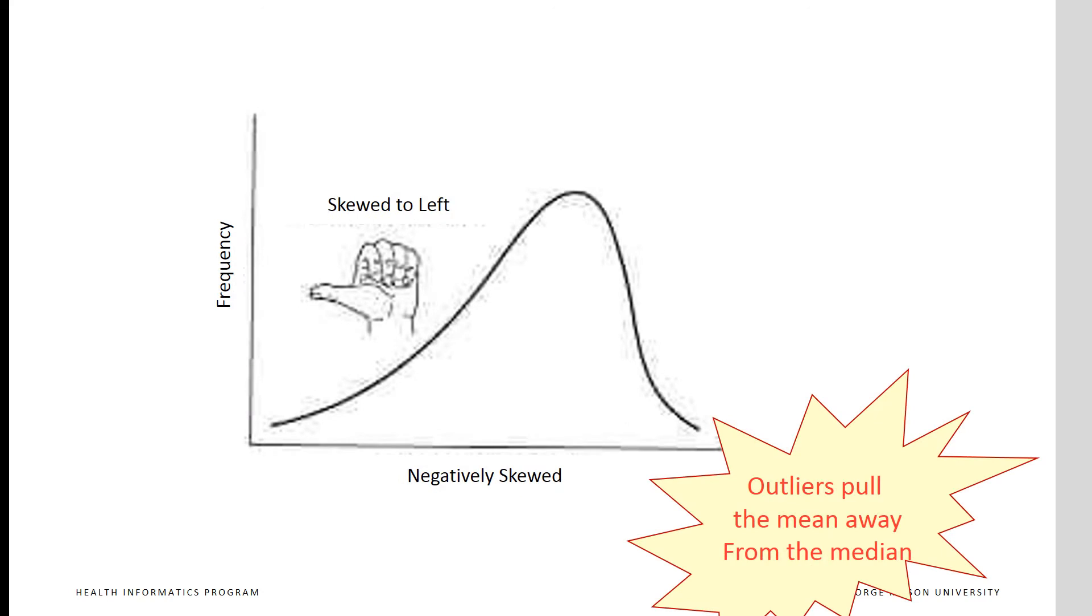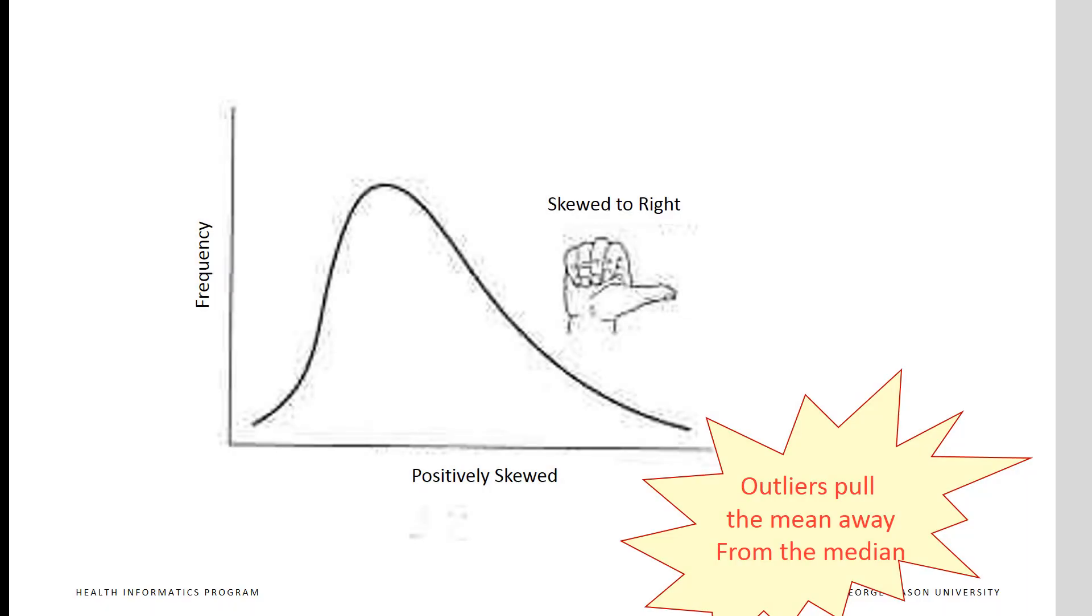When mean, median, and mode are different, if mode is greater than median and median is greater than mean, then we have a distribution skewed to the left. Mean, median, and mode are different here. Here, mean is greater than median and median is greater than mode; this distribution is skewed to the right.